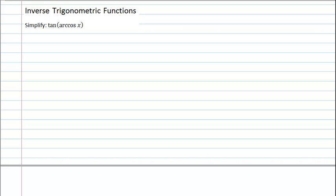In this example we're dealing with inverse trigonometric functions. The question asks us to simplify tan of arccos x. Now this may look kind of confusing at first, but if we understand what arccos x actually means, we'll realize that it might not be as crazy as you think. Arccos x is just another way of writing cos inverse x, which is just an angle.